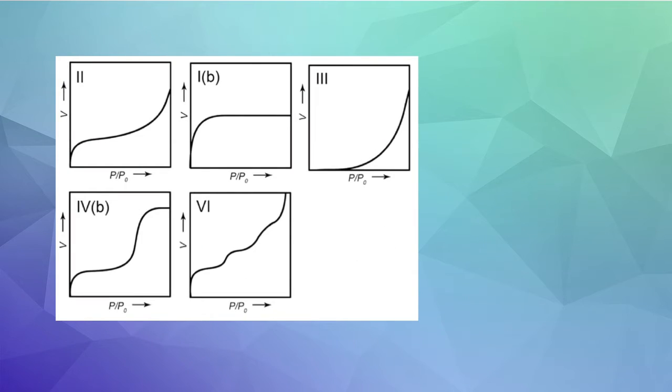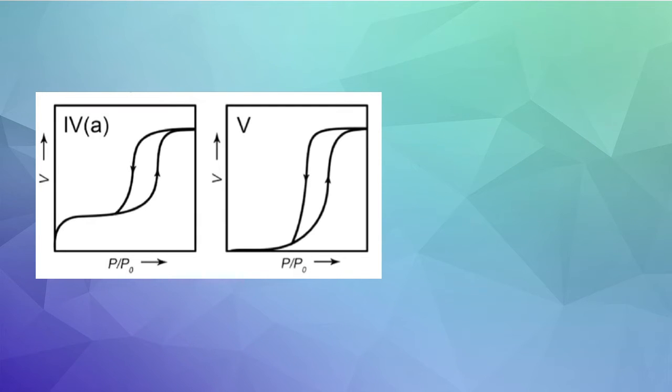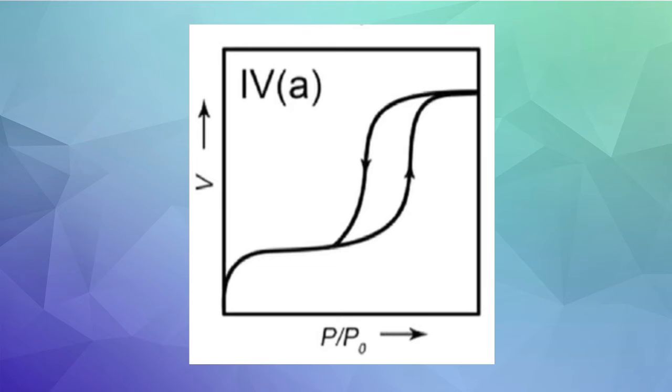For isotherms with no hysteresis loops, the mechanism of adsorption and desorption is the same, just in different directions. Thus, they are described as reversible. But when there is a hysteresis loop, the pathways are different. This is likely to occur when the pore width is greater than the critical width, which depends on the size of the adsorbate. When that happens, the gas component condenses along the adsorption branch and evaporates along the desorption branch.